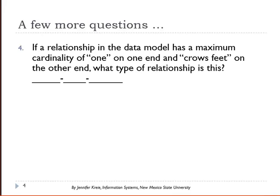If a relationship in the data model has a maximum cardinality of 1 on one end and crow's feet on the other end, what type of relationship is this?